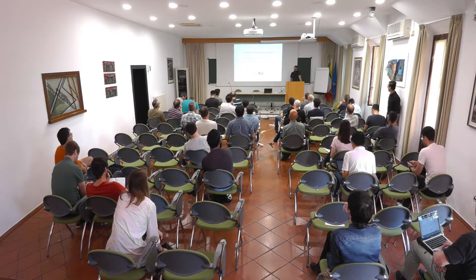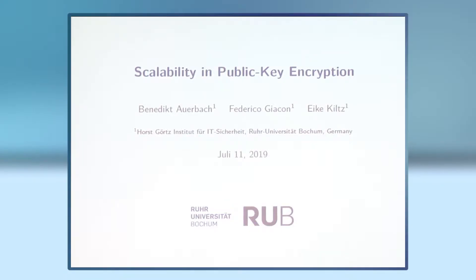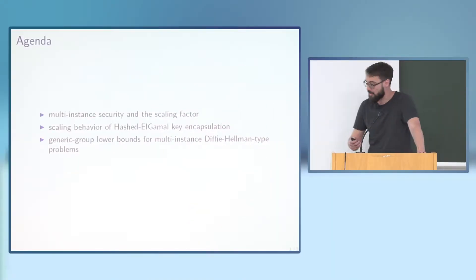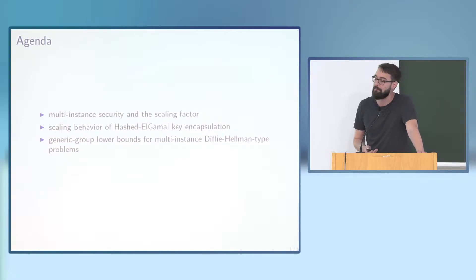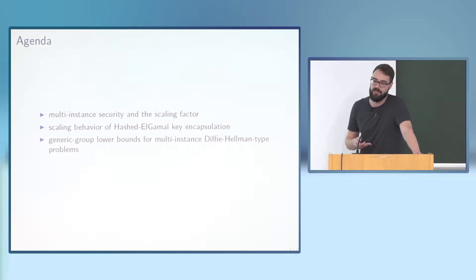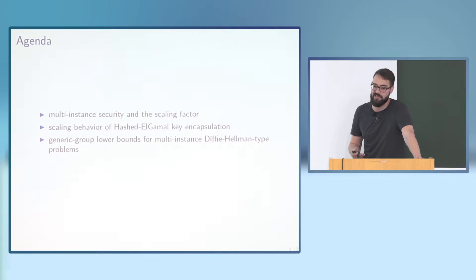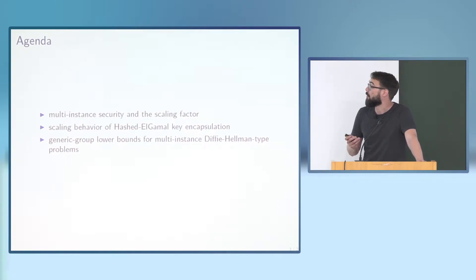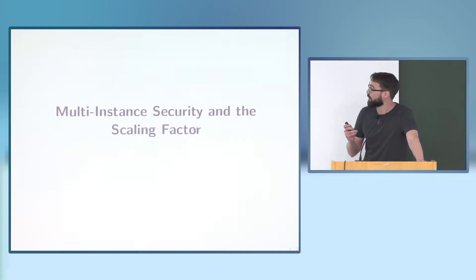I will be presenting joint recent work with Eike and Federico, talking about generic group lower bounds. The motivation for looking at these concrete problems stems from investigating the scaling behavior of public key encryption. I'll start with an introduction to multi-instance security, then talk about scaling, briefly discuss our main results on the scaling behavior of hashed ElGamal key encapsulation, and spend most of the time on new generic group lower bounds on the hardness of computing multiple instances of discrete logarithm-type problems.